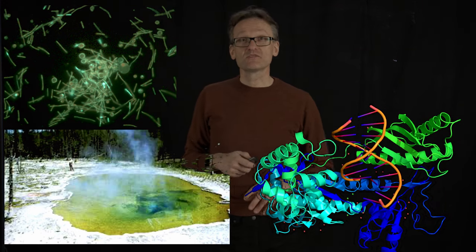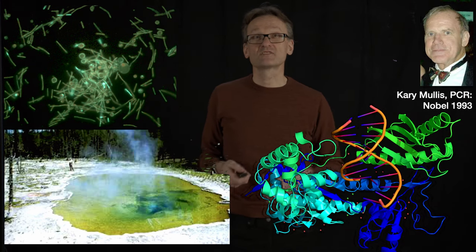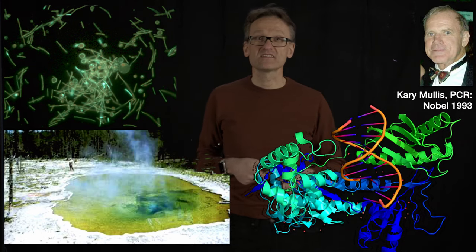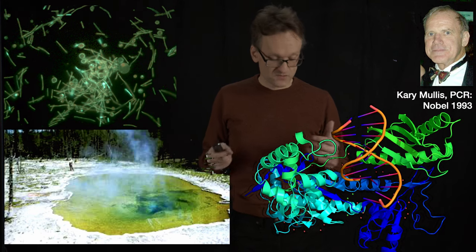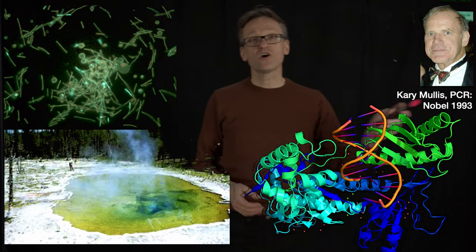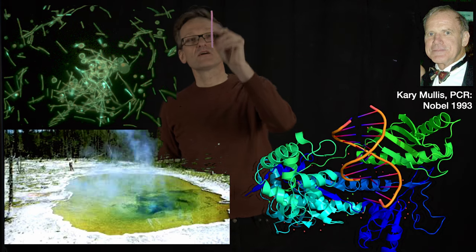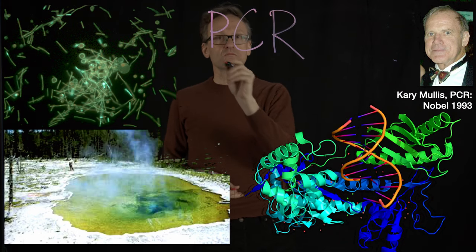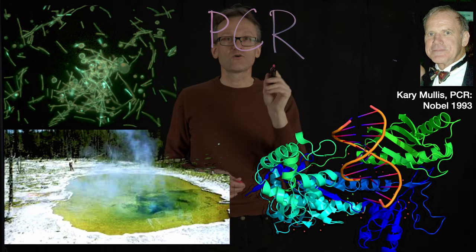The person who came up with this seemingly, it's a dirt simple idea, right? It was Cary Mullis. And he got the Nobel Prize in 1993 for this. And this process is called PCR. That stands there. I can write it down. PCR. Polymerase Chain Reaction.